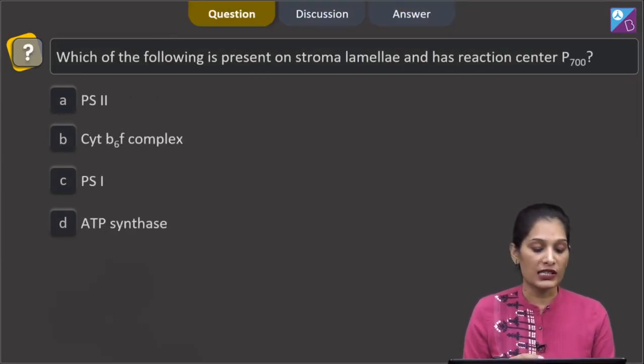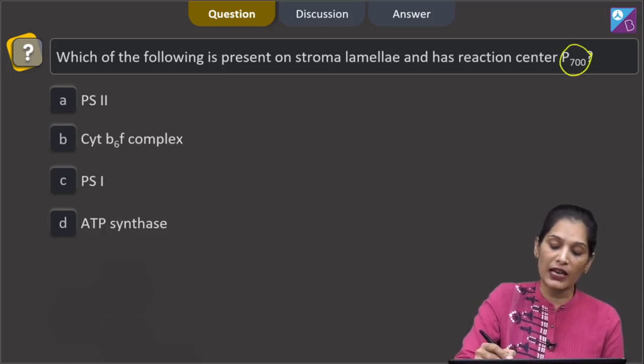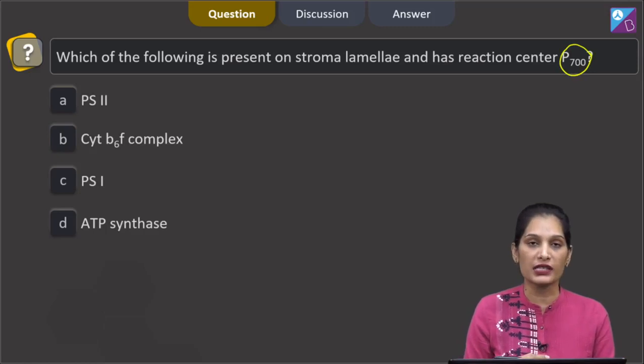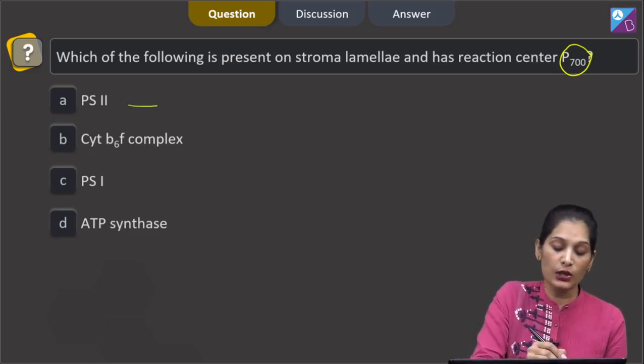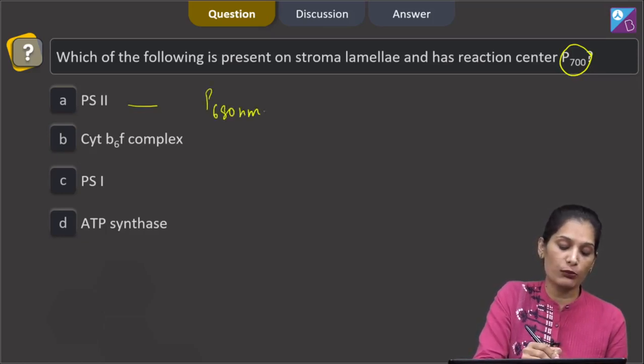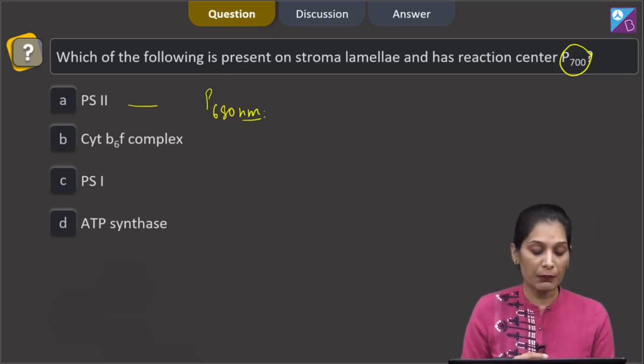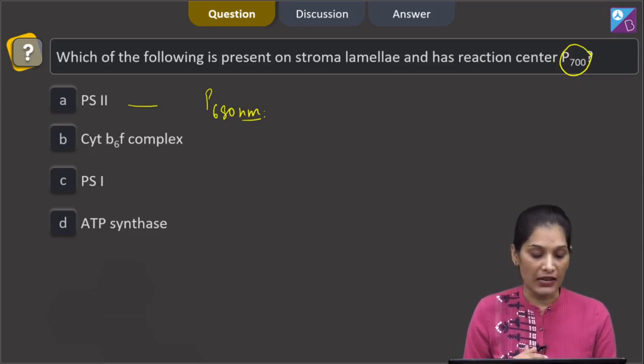Let us move to the next question. This question says which of the following is present on stroma lamellae and has reaction center p700? This question giving you hint by writing p700. We are talking about photosystem 1 or PS1 because PS2 has reaction center which has maximum absorption peak at p680 nanometer or in short you can say p680.